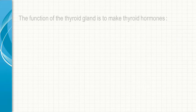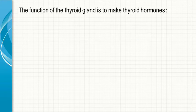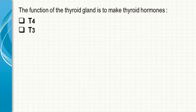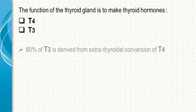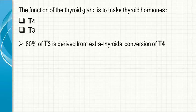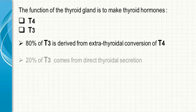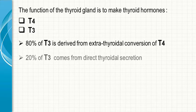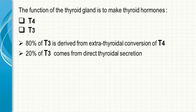The function of the thyroid gland is to make thyroid hormones T4 and T3. 80% of T3 is derived from extra-thyroid conversion of T4, whereas 20% of T3 comes from direct thyroidal secretion.